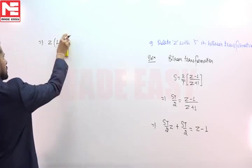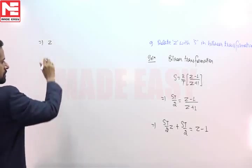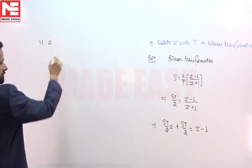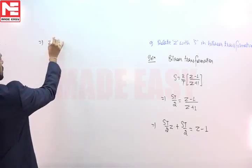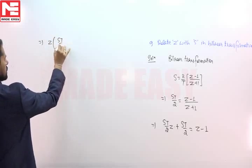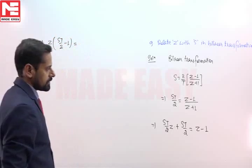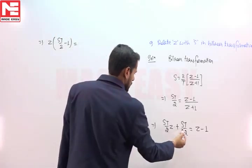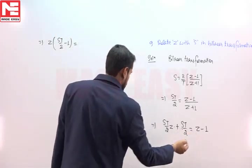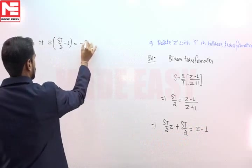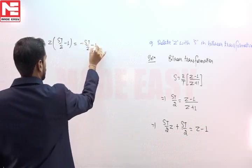So we have to do correction here. We will write z in bracket st by 2 minus 1, and in the RHS term, if we take this term to the RHS, we will write minus st by 2 minus 1.